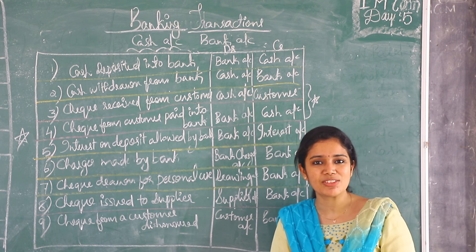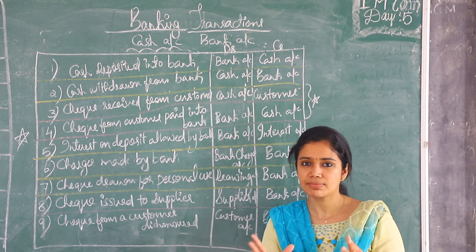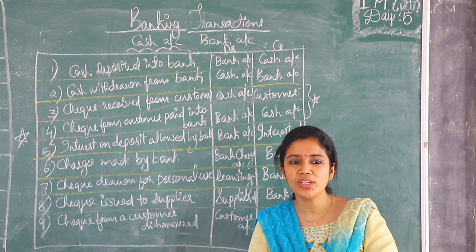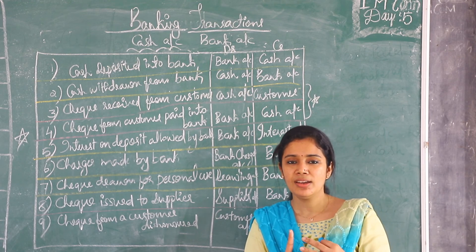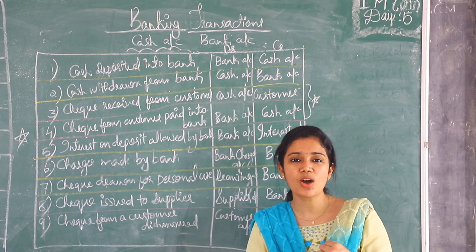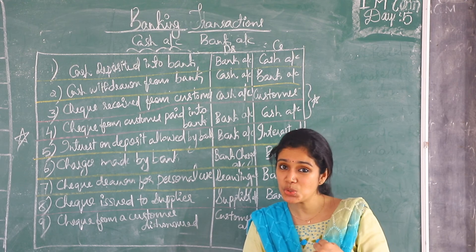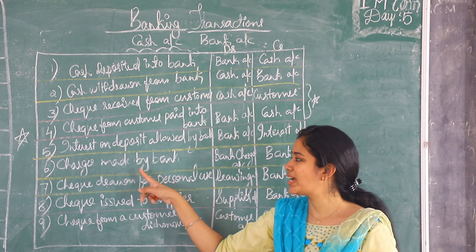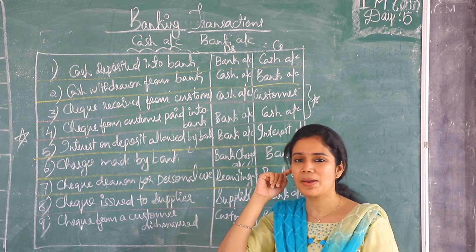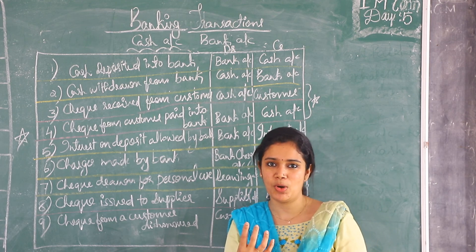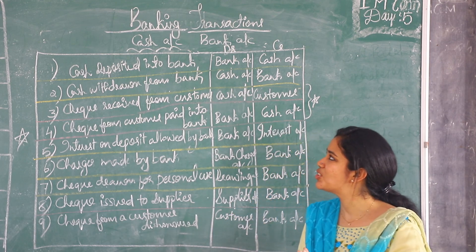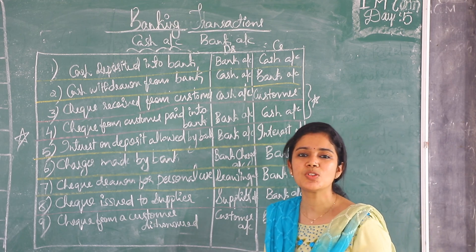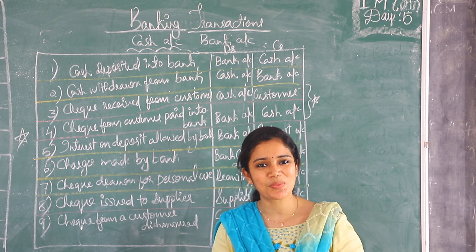These are the entries you will have to pass with regard to banking transactions. The main transactions are: depositing cash into the bank account, withdrawing cash from the bank account, receiving a check, dishonor of check, issuing a check to the supplier, bank charges, and interest on bank deposit. Make sure that you have understood these transactions and the entries. If you have any doubts, please ask me. Learn well. Thank you so much.